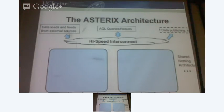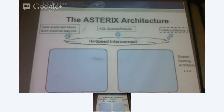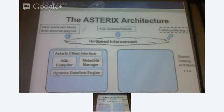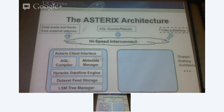Let me explain what the architecture looks like. Basically it's a shared-nothing architecture. It basically means you have a cluster of nodes, and each node has its own CPU and memory. Nothing is shared except they can communicate using the network. I have a node here, I have an Asterix plan interface, a language compiler and a catalog. We have a data flow engine, storage, and finally the index, which is the LSM log-structured merge tree structure.